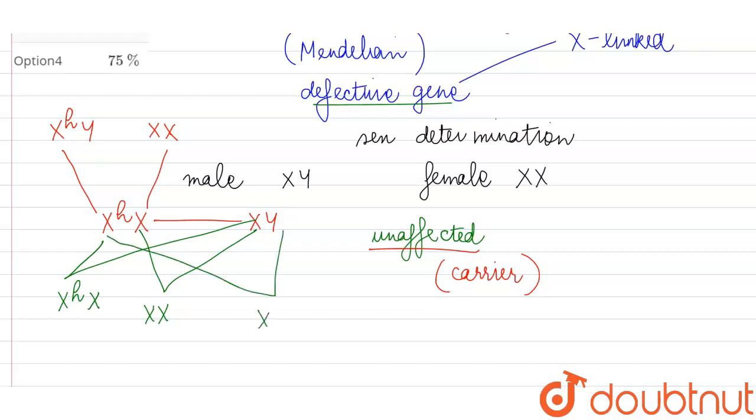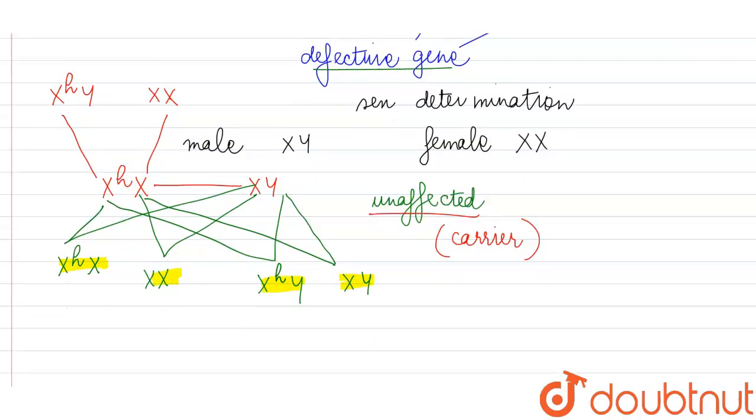Then there is a possibility of haemophilic son, but 50 percent possibility is also of the normal son. So out of these possibilities we can see out of the four progeny, two are carrying the defective gene.